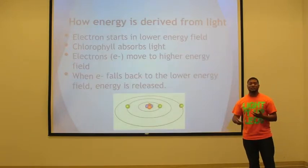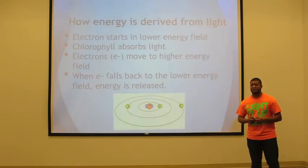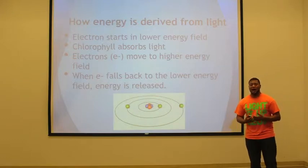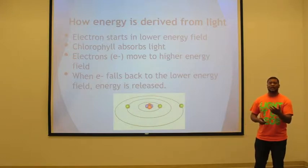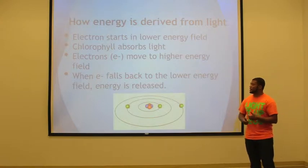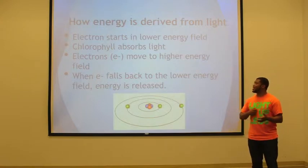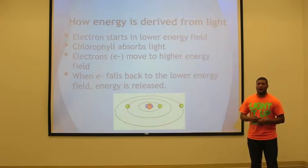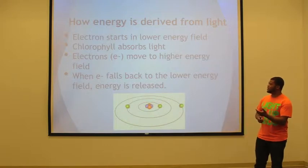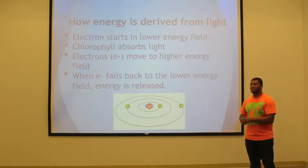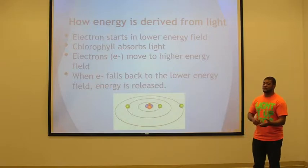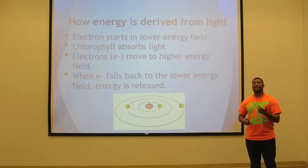How is energy derived from light? An electron starts in a low energy field. When a chloroplast absorbs light, the electrons get excited and actually move to a higher energy field. After they move to this high energy field, when they fall back down to the low, original energy field, energy is produced, and that's how plants derive energy.